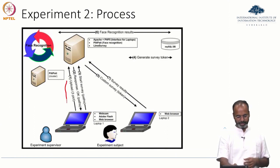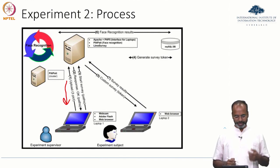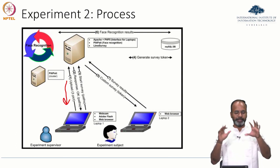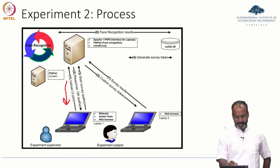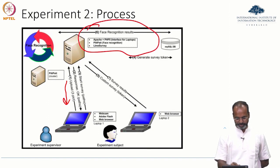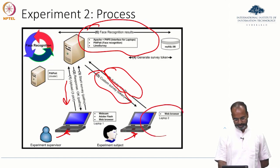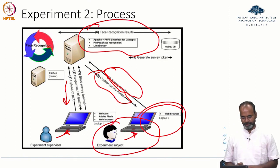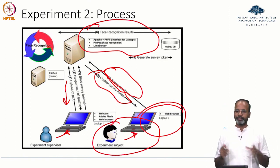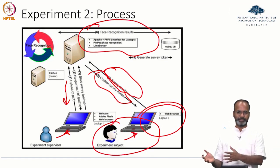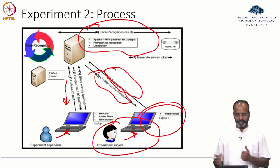What they do is they take a picture of the user, upload it from the supervisor to the server, do the comparison using face recognition, results show up, and then the user fills a custom survey. The results for the survey are given back. The supervisor takes the picture, uploads the picture, gets the comparison — it is simply taking pictures, uploading to a server, doing the comparison, asking the user to fill the survey, and showing the matched pictures back.